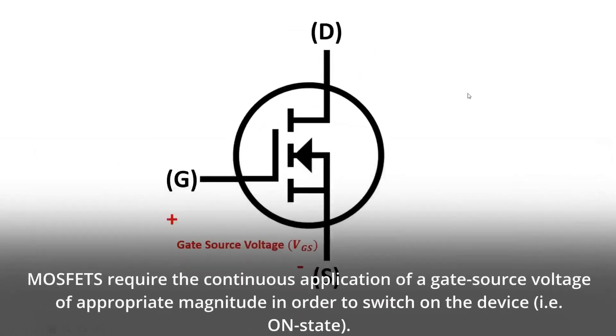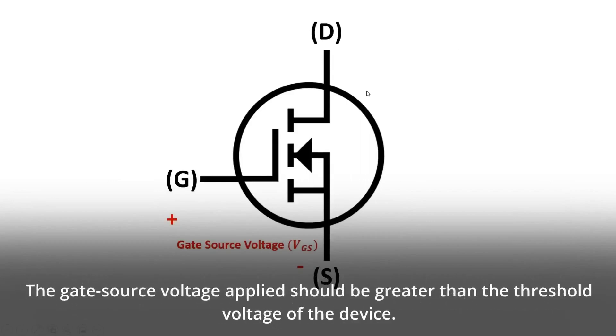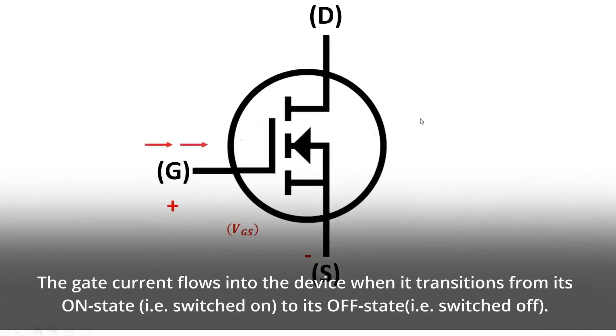MOSFETs require the continuous application of a gate source voltage of appropriate magnitude in order to switch on the device, i.e. on-state. The gate source voltage applied should be greater than the threshold voltage of the device. The gate current flows into the device when it transitions from its on-state, i.e. switched on, to its OFF state, i.e. switched off. This transition occurs when the gate capacitance gets either charged or discharged.